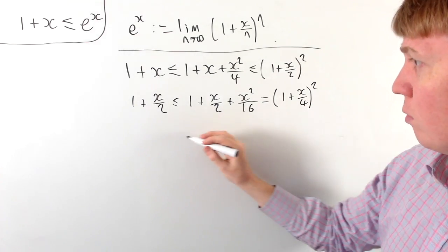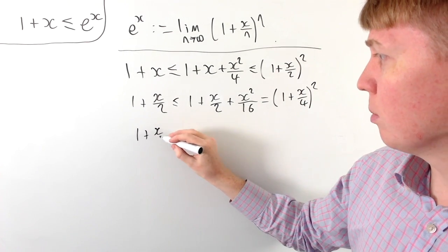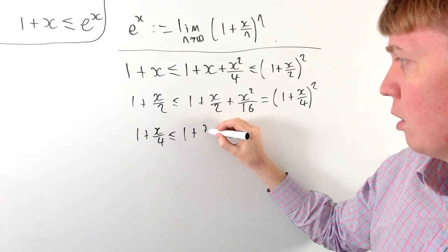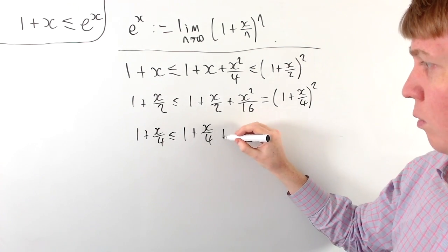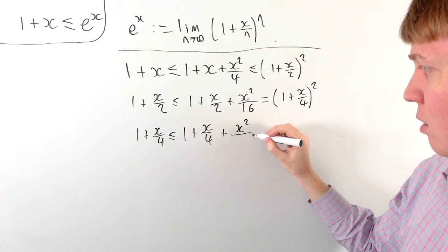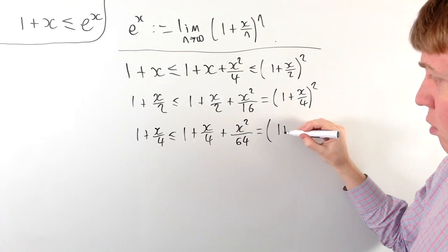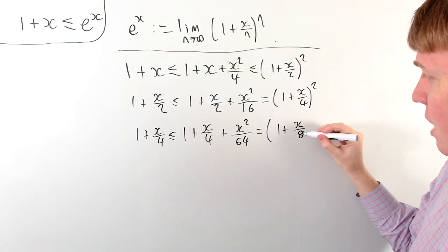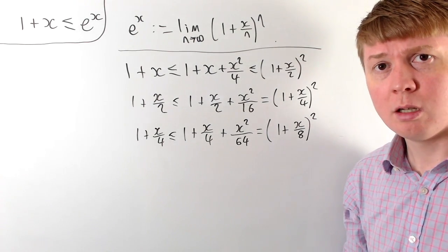We keep going like this. With the 1 plus x over 4 term we apply the same procedure: 1 plus x over 4 is less than or equal to 1 plus x over 4 plus x squared over 64, so that when we factorise we have 1 plus x over 8 all squared.